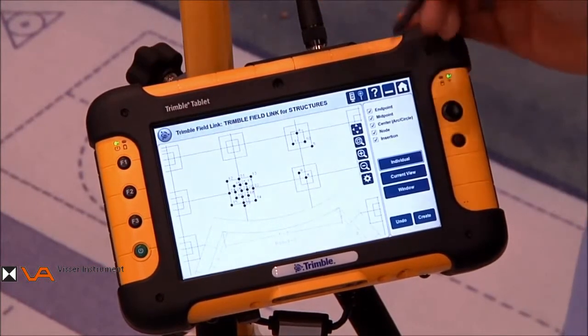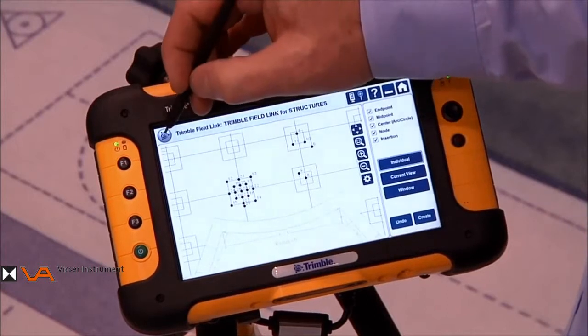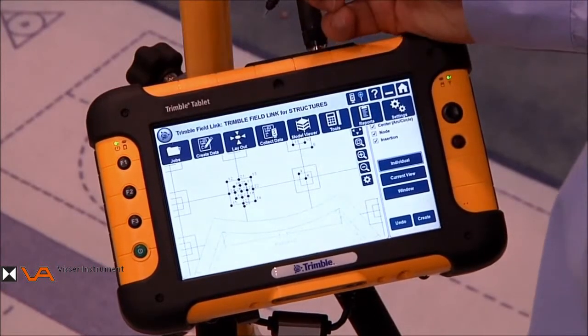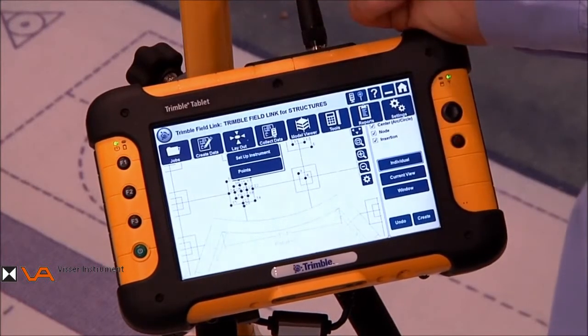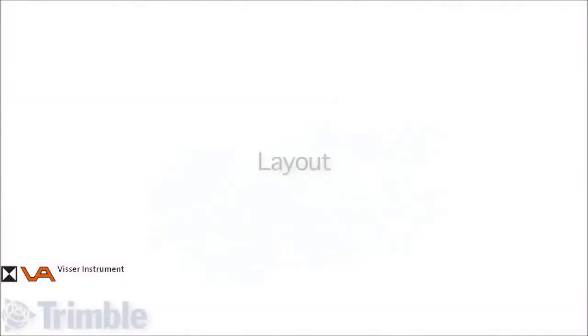Since we're finished with our point creation, what we want to do is go back to the Trimble Globe to bring up the ribbon. We now go to the Layout Tools, and this allows us to actually lay out points. So the next step is to do the layout.